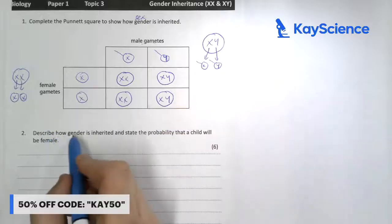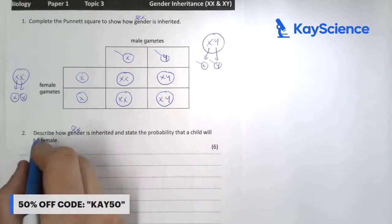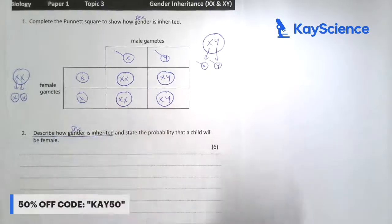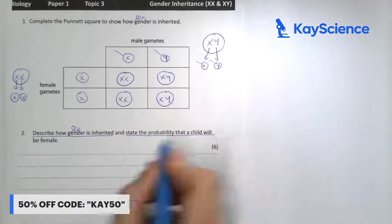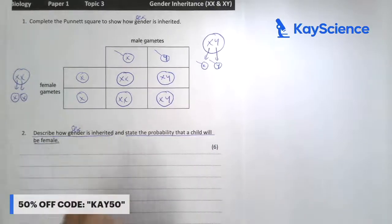So describe how gender, sex, is inherited. That's the first part of the question, and state the probability that the child would be a female.